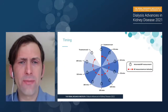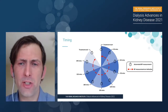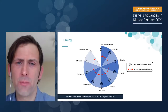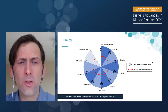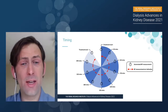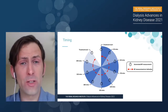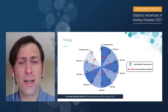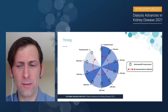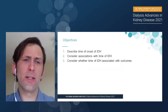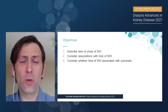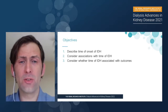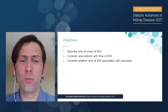Thinking about timing: in the Renal Research Institute clinics, blood pressure is measured automatically every 30 minutes throughout treatment, but can also be measured on indication, particularly when patients get symptoms. We couldn't really define the time of onset of intradialytic hypertension any better than to a 30-minute window, so we binned episodes into 30-minute windows throughout the dialysis treatment from start to end. Our objectives were to describe the time of onset of IDH, look at associations between clinical and treatment parameters and episode timing, and determine whether the time of IDH was associated with patient outcomes.